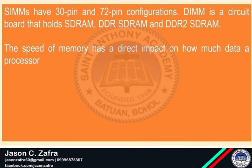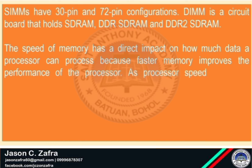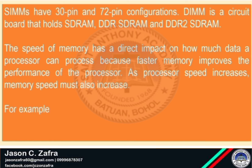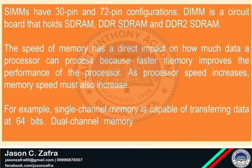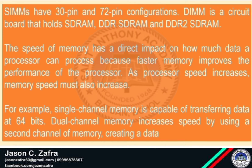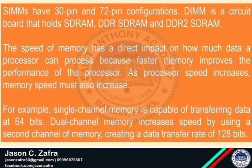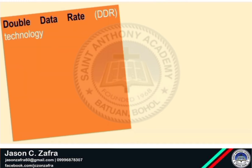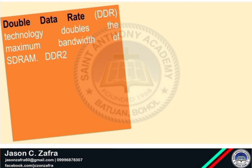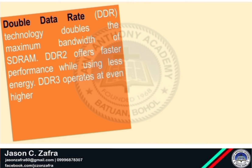The speed of memory has a direct impact on how much data a processor can process, because faster memory improves the performance of the processor. As processor speed increases, memory speed must also increase. For example, single-channel memory is capable of transferring data at 64 bits. Dual-channel memory increases speed by using a second channel of memory, creating a data transfer rate of 128 bits. Double data rate or DDR technology doubles the maximum bandwidth of SDRAM. DDR2 offers faster performance while using less energy.